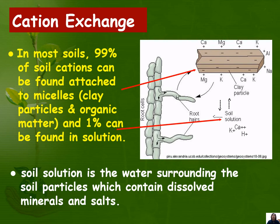The soil solution is the water surrounding soil particles which contains dissolved minerals and salts. Cation exchange is not only happening between the soil solution and the clay particles; it can also occur between the root hairs or plant roots and the soil solution and/or the clay particles.